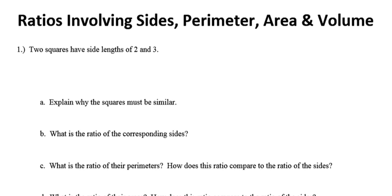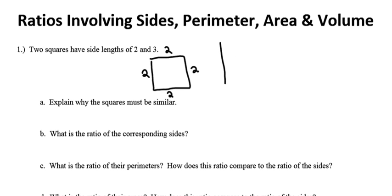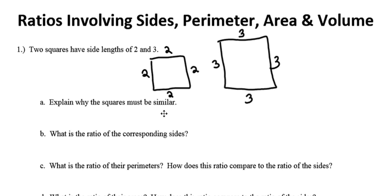In this video, we're going to examine the relationship between ratios that involve the sides, perimeters, areas, and volumes of figures. We're going to start out by looking at two squares with sides of length 2 and 3. The very first thing we're asked to do is explain why the squares must be similar. All squares are the same basic shape, making them similar. They meet that most basic definition of what it means for two things to be similar: having the same shape.